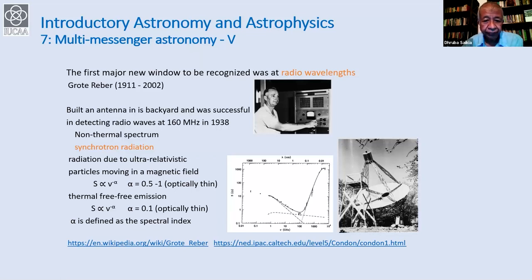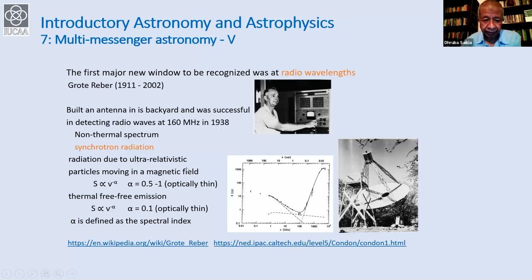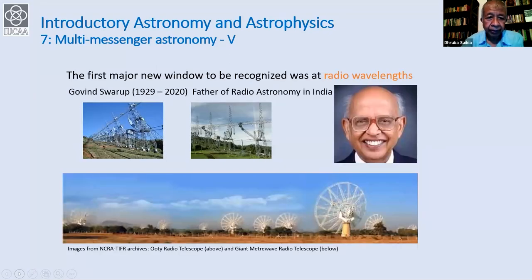Now let's look at two major telescopes in India built by Govind Swarup. The first is the Ooty Radio Telescope — a parabolic cylinder about half a kilometer long, located in Ooty, with a slope equal to the latitude of the place. It is equatorially mounted so that to follow a source as the Earth rotates, all it needs to do is rotate in one axis; it can be electronically steered in the other direction.